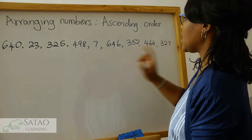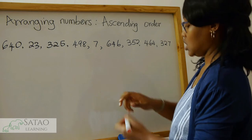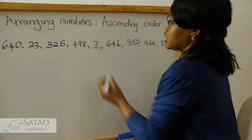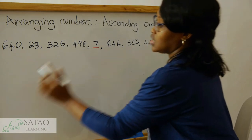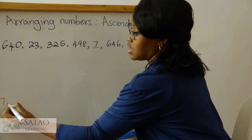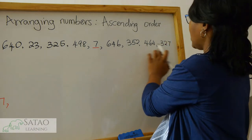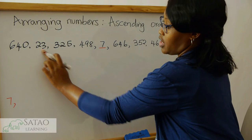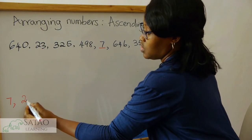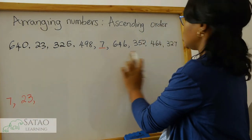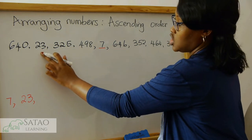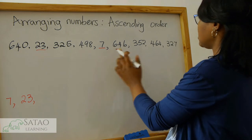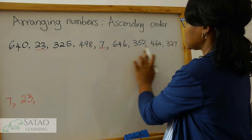Is there any one-digit number? Yes, there's a one-digit number — that one. Make sure you mark it so that you remember that you've already written it down. So we start with that one. That's the only one-digit number. Is there a two-digit number? Yes, so we write it down. That's the only two-digit number. So the rest we are left with are three-digit numbers.